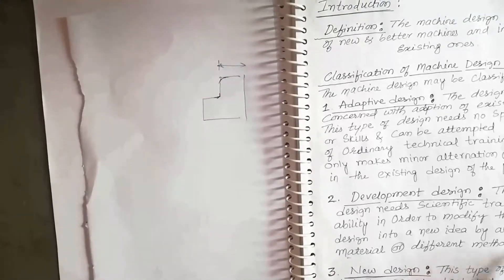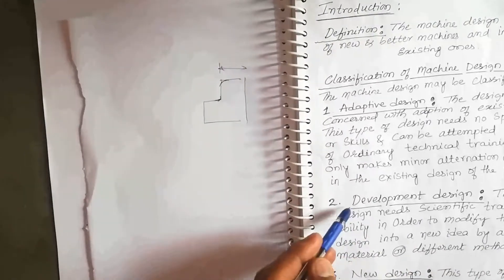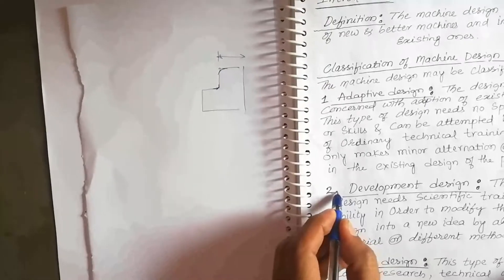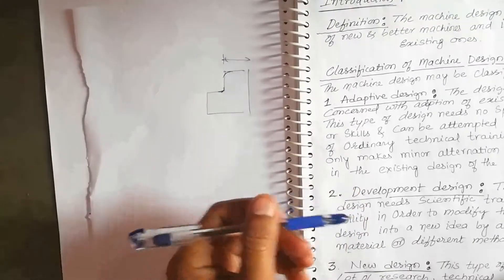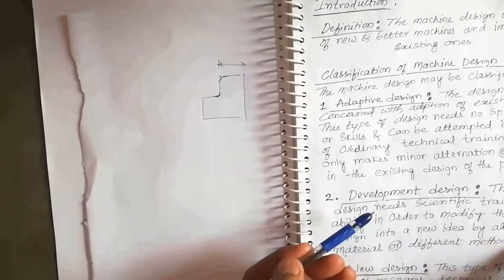Also by adopting different methods of manufacturing, all these are included in development design. We are working on development design in DMM One where all the products exist and we are going to replace the material, replace some dimensions, and also the method of manufacturing.